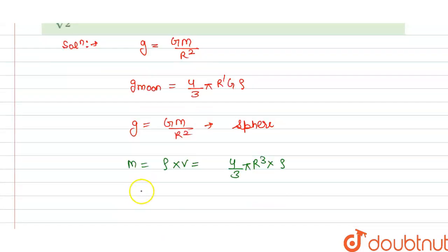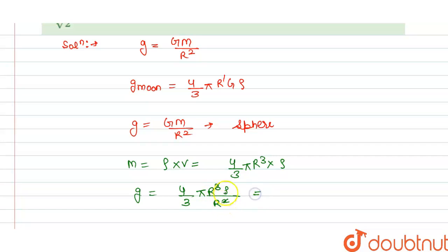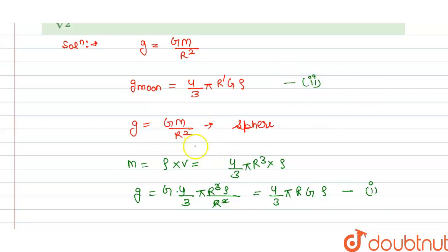Simplifying, the r squared cancels with r cubed leaving one power of r, giving us: g equals (4/3)π r G rho. This is equation 1 for Earth. It is also given to us that r' (moon's radius) equals r divided by 4.